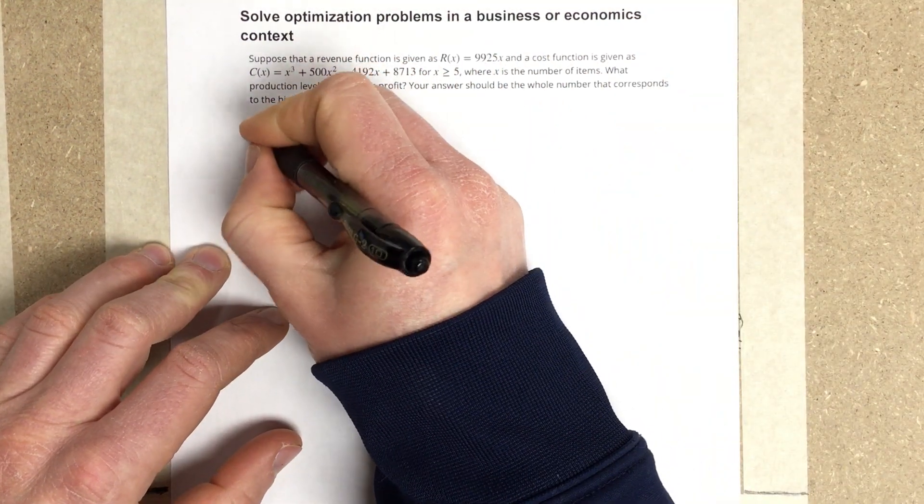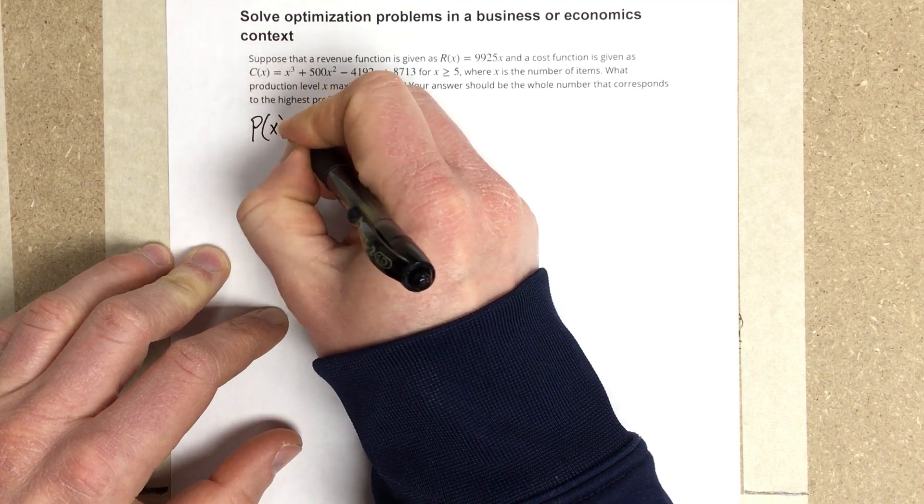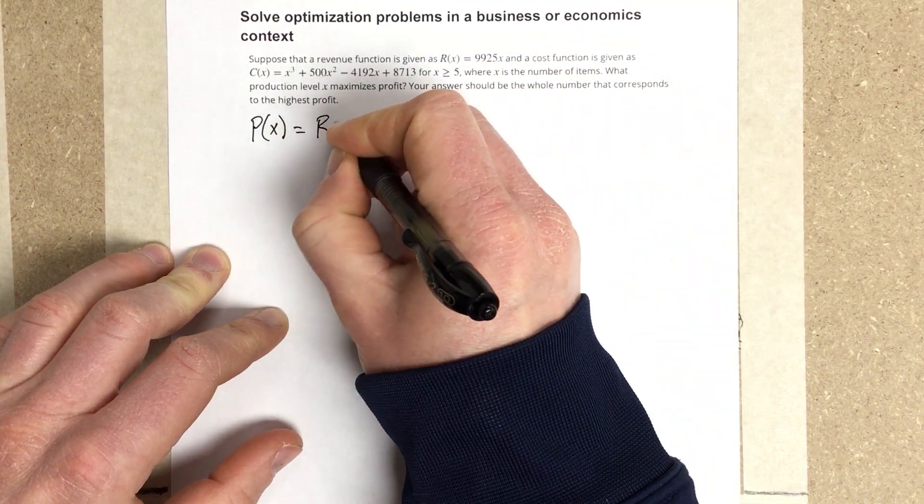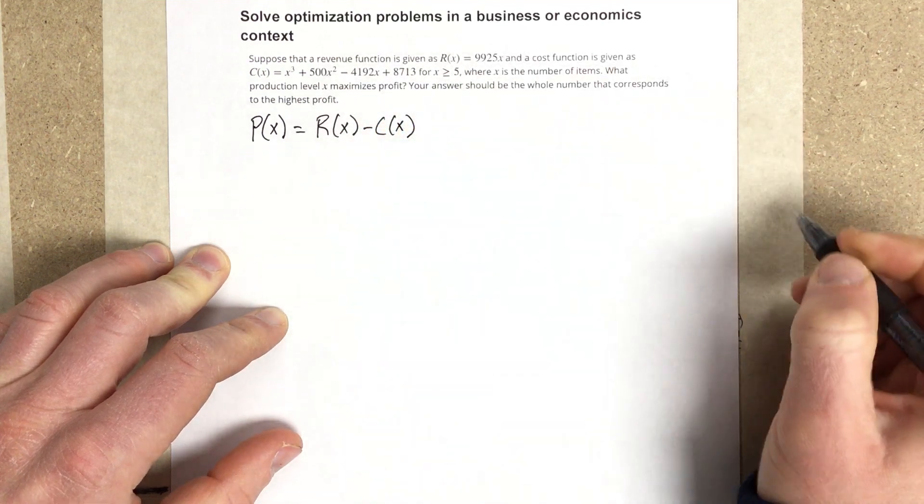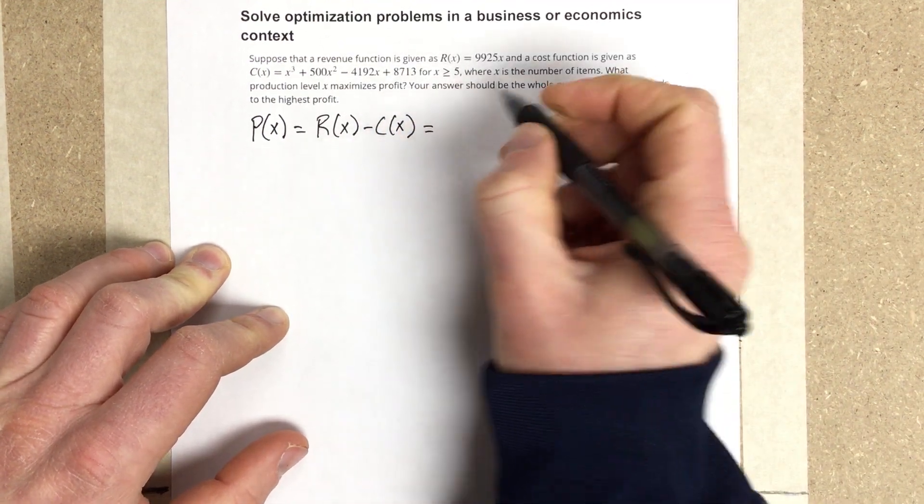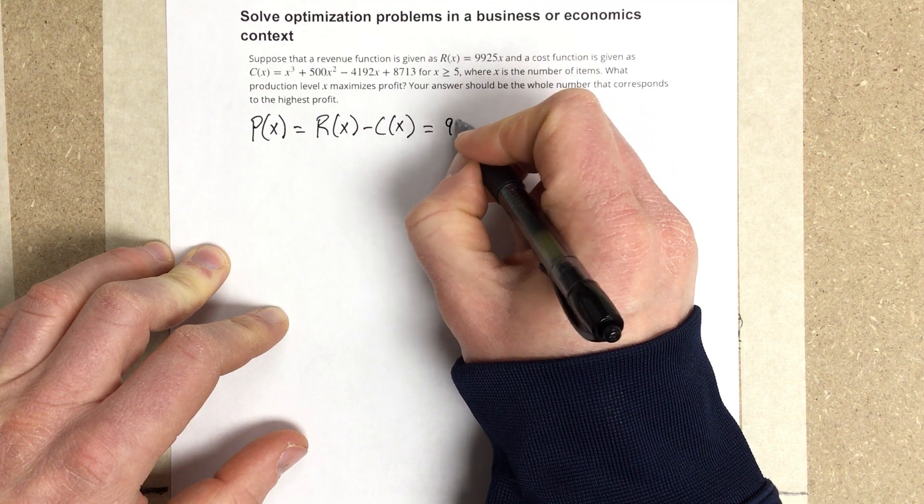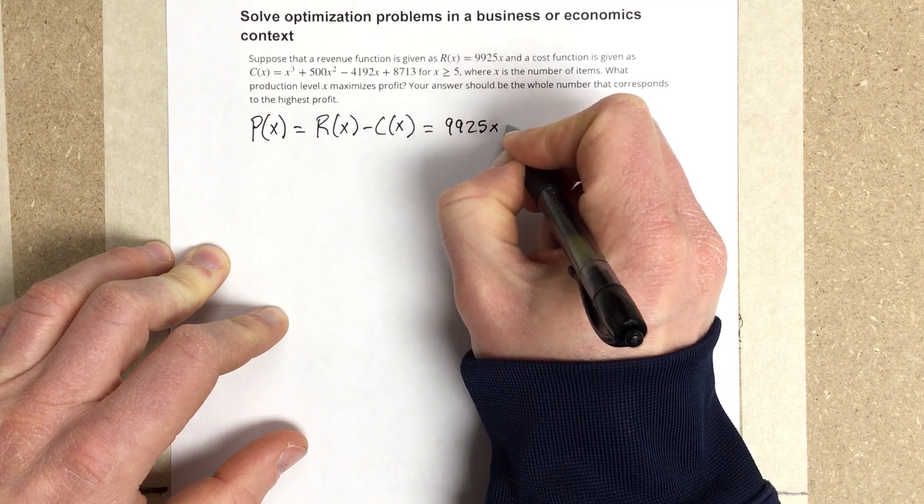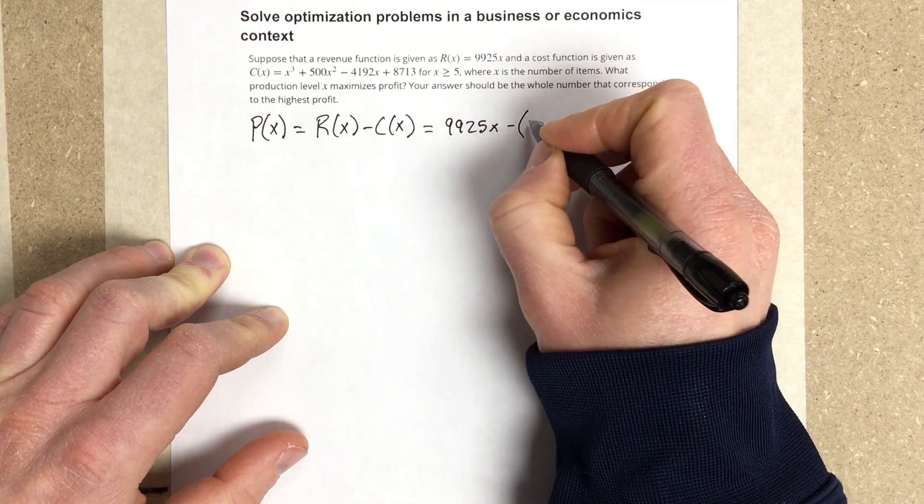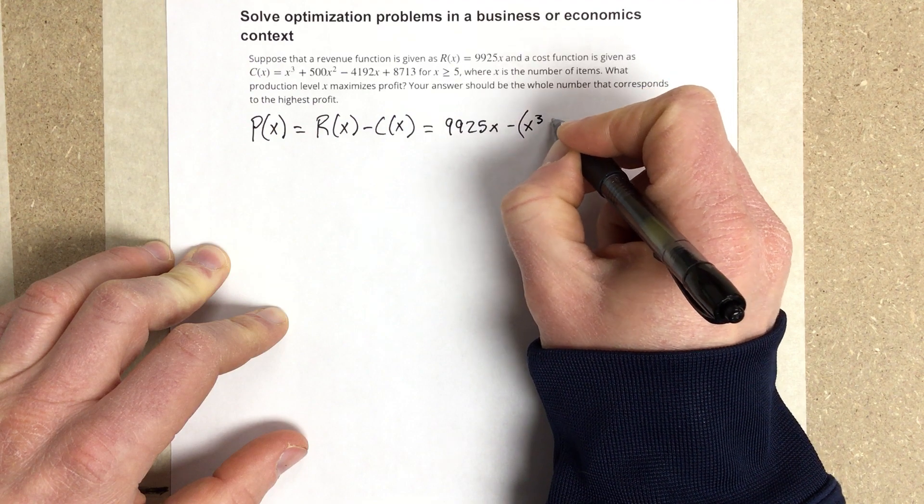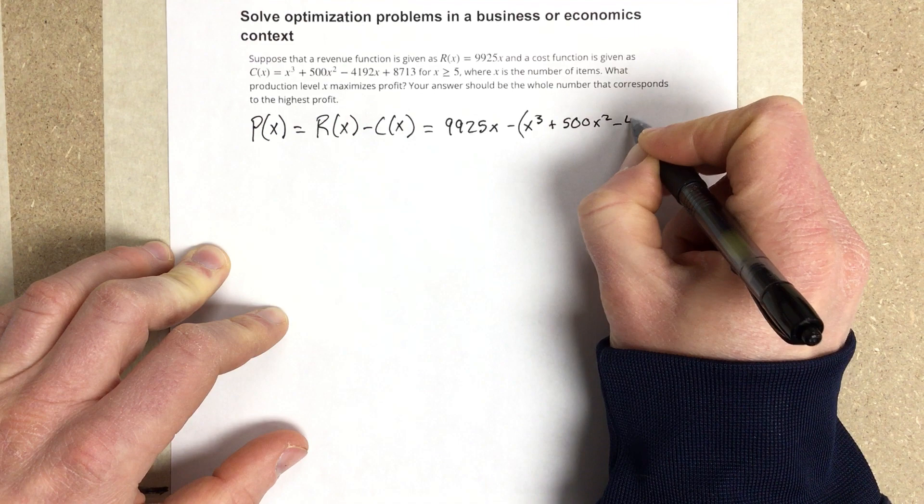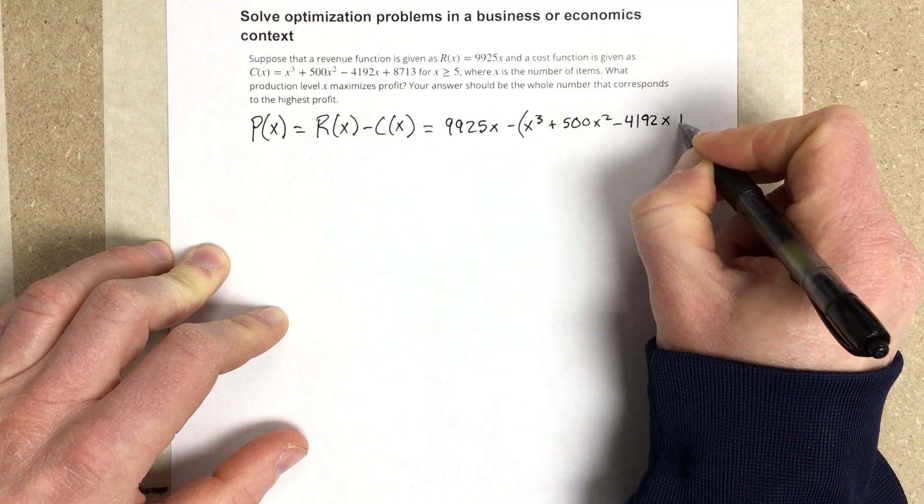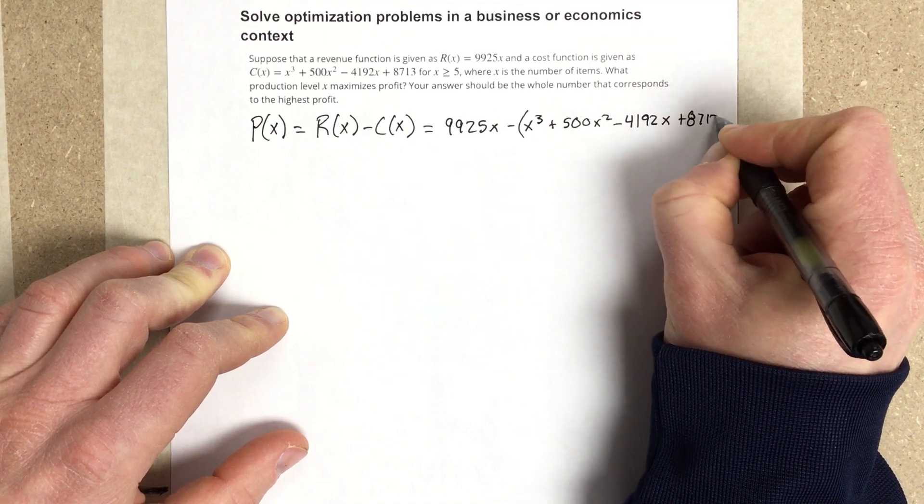Profit is equal to the revenue of your company minus the cost of your company. In our case, that would make it P(x) = 9,925x - (x³ + 500x² - 4,192x + 8,713).